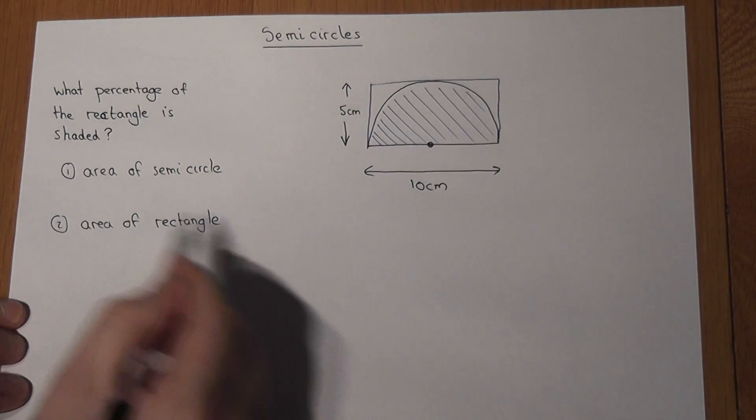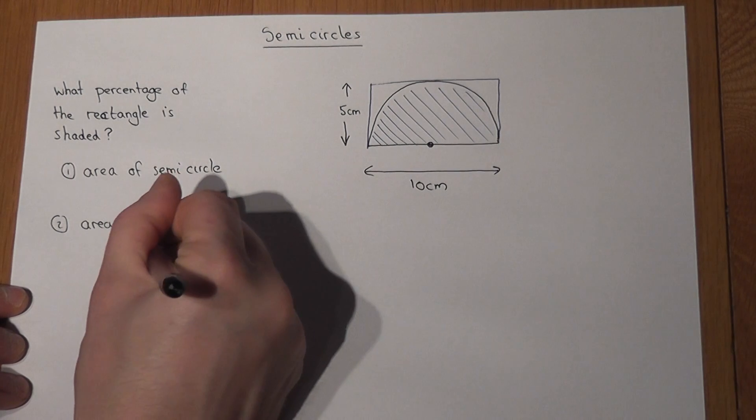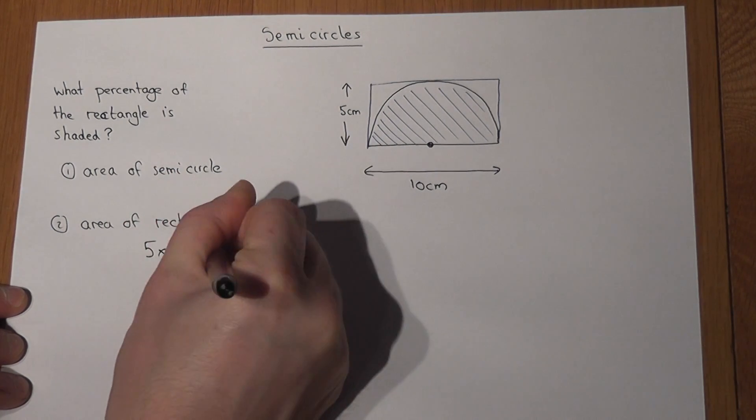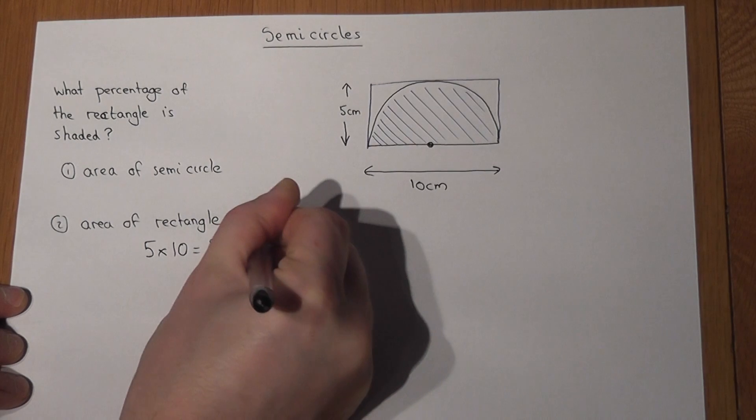So the rectangle area must just be 5 lots of 10, which is 50 centimetres squared.